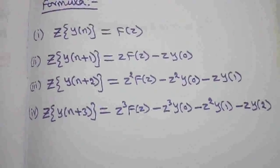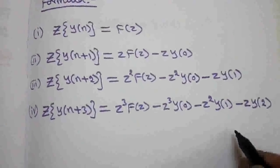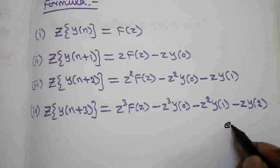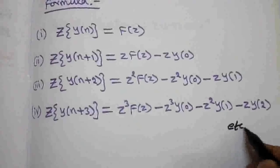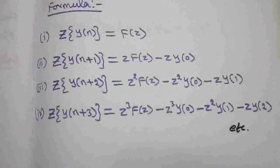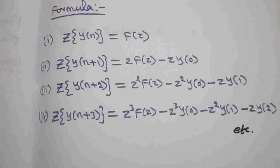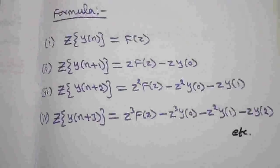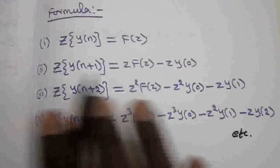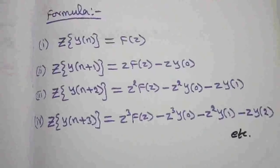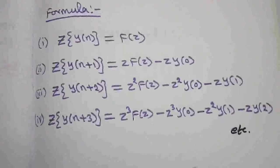The third formula: Z-transform of y(n+3) equals z³·F(z) minus z³·y(0) minus z²·y(1) minus z·y(2), and so on. These are the formulas we will use when solving difference equations using the Z-transform method.